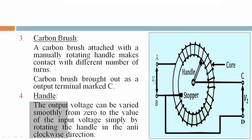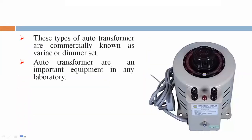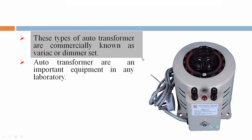The output voltage can be varied smoothly from zero to the value of the input voltage by simply rotating the handle in the anti-clockwise direction. The output voltage can be varied from minimum to maximum by rotating the handle. We can see here that the handle will be in this portion.